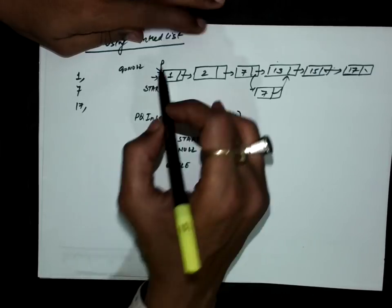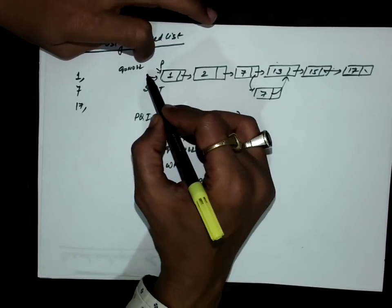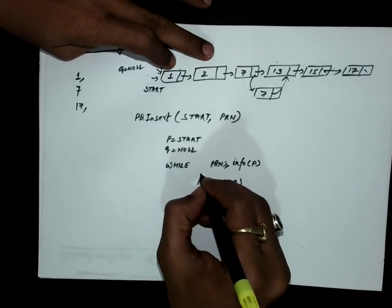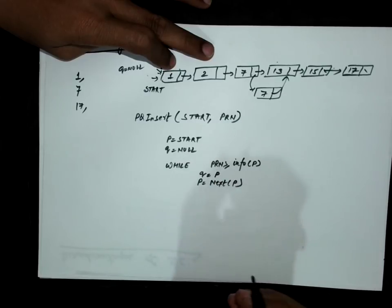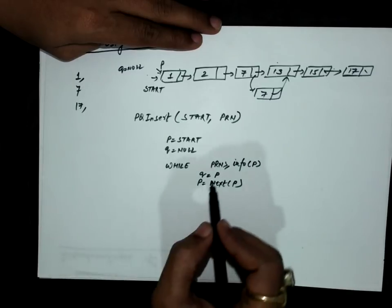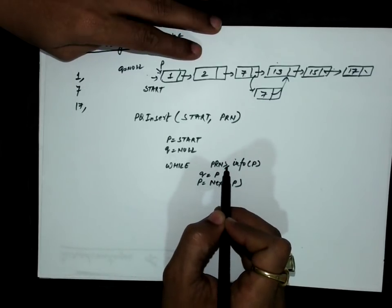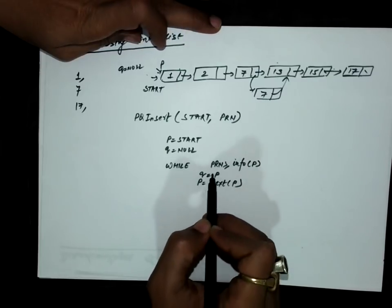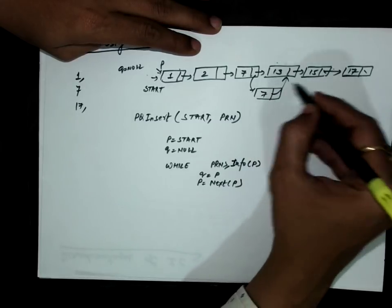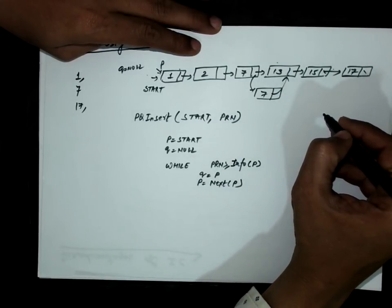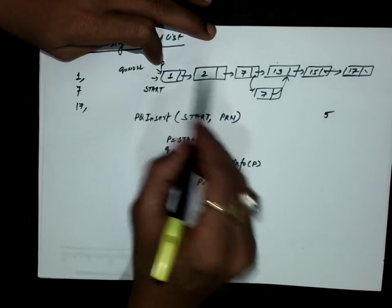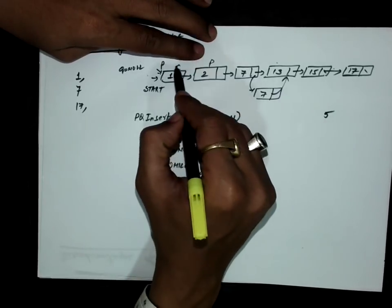At the same time, since I am moving P to the second node, I move Q to the first node so that Q always remains the predecessor of P. Before moving P, I set Q = P. For example, if we have to insert 5: 5 is greater than info(P), so P moves ahead and Q follows.